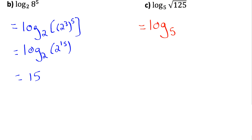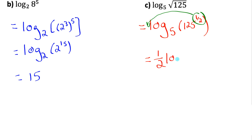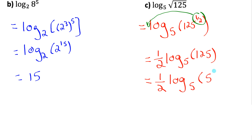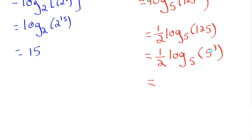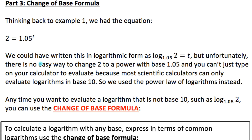For part c, let's use the power law of logarithms. It's important to understand that a square root symbol is an exponent of one half. Rewriting it in that format and applying the power rule, I bring the one half down as the coefficient: one half times log base 5 of 125. Log base 5 of 125 is 3, since 5 cubed is 125. So I have one half times 3, which is three halves or 1.5.